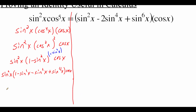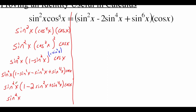Now we've got some like terms to combine inside the parentheses. We've got one, then minus sine squared of x and minus sine squared of x — putting those together gives minus two sine squared of x — plus sine to the fourth power of x, and then cosine of x on the back end. Now I'm going to distribute the sine squared in: sine squared times one is sine squared of x; sine squared times negative two sine squared is negative two sine to the fourth power of x; and sine squared times sine to the fourth power is plus sine to the sixth power of x. Then we've still got cosine of x on the back end.